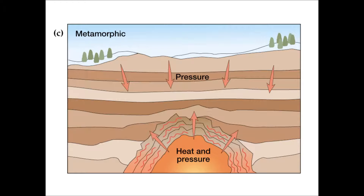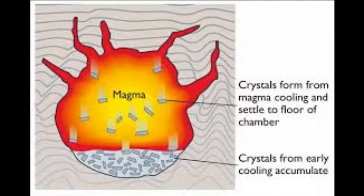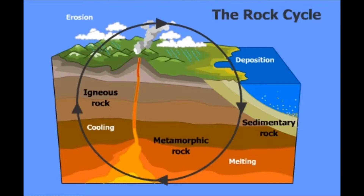Sedimentary rocks could then undergo heat and pressure and stress, which would then lead into metamorphic rocks. After some partial melting, we have magma. New material would be added to the cycle. There would be cooling and crystallization, which lead us around a never-ending cycle.